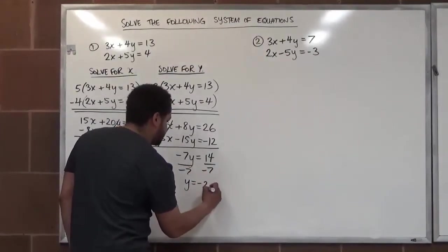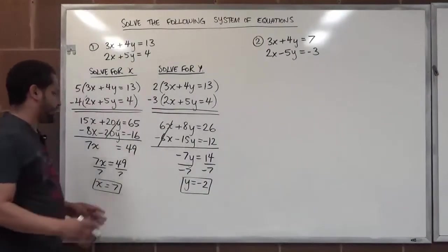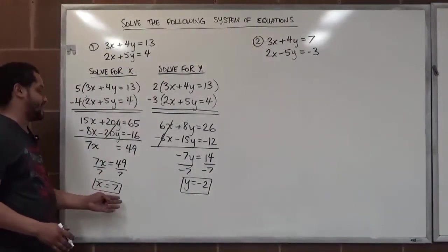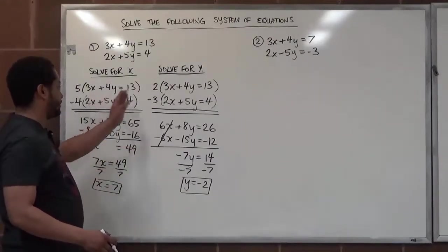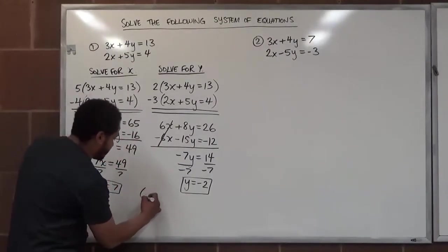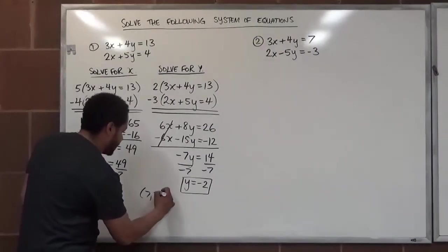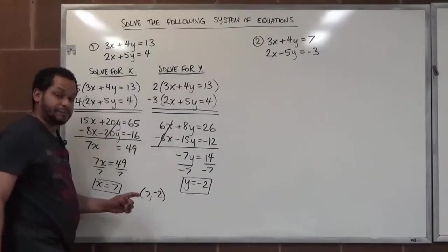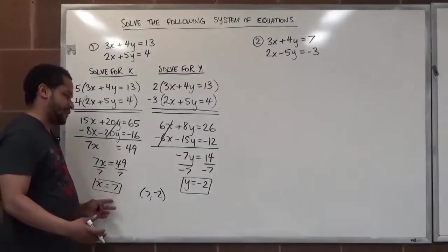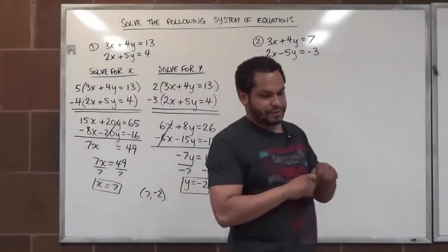Our y solution for this problem is negative 2. If you ever want to solve a system of equations with each variable independent of the other, you do it this way and you always get the right solution. Even if you do one of them incorrectly, it's better to get just one wrong and get partial credit instead of getting both wrong because one wrong solution propagates into the next.